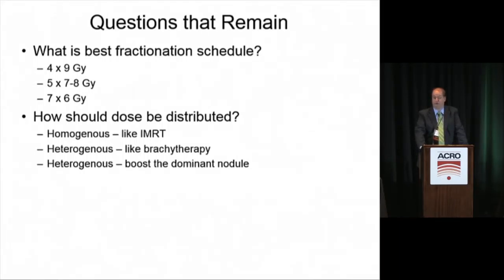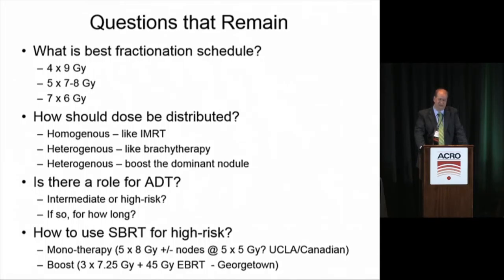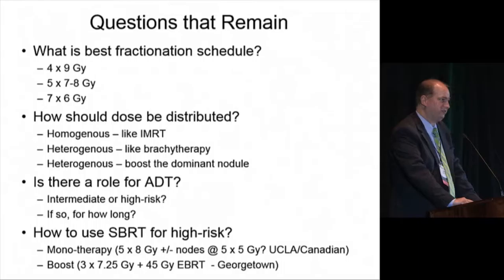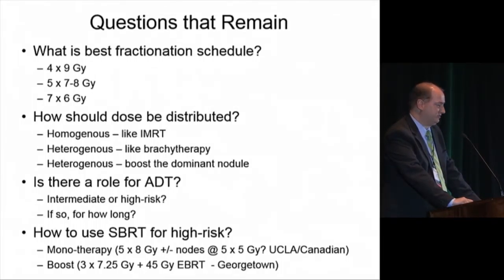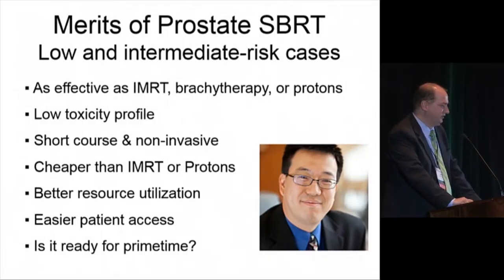Remaining questions include: What is the best fractionation schedule — 4 gray times 9, 5 fractions of 7 to 8 gray where most data resides, 7 fractions of 6 gray as in Sweden, while 10 gray times 5 is too high? How should dose be distributed — homogeneous like IMRT, heterogeneous like brachytherapy at 150-200%, or boosting the dominant nodule? Is there a role for androgen therapy for intermediate or high-risk disease? For high-risk disease, should we treat like Canada or UCLA with 5 gray times 8 and lymph nodes, or like Georgetown with 45 gray conventional radiation boosted with SBRT of three fractions of 7.25 gray with androgen therapy?